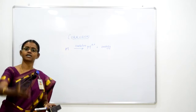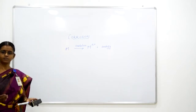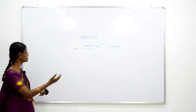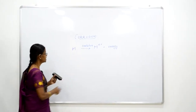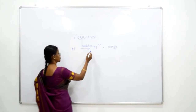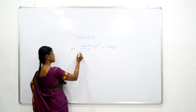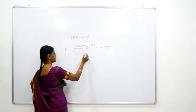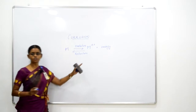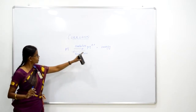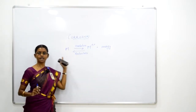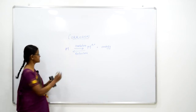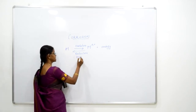Why does corrosion occur in nature at all? Let us look at the reverse of corrosion. What is the reverse of corrosion? That means metal ions should undergo reduction to form the corresponding metal. Metal ions take some energy and then form the metal, and this process we call metallurgy.